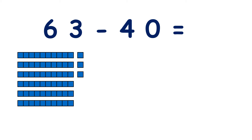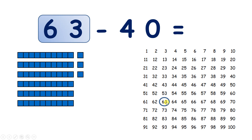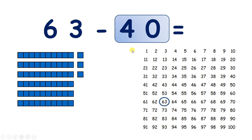We have 63 minus 40. So we start with 6 tens and 3 units. We can find 63 on our hundred square. And we're subtracting 40, which means we're going to take away 4 of these tens.